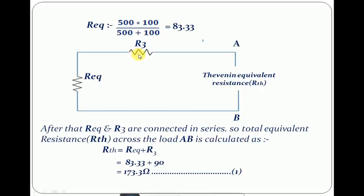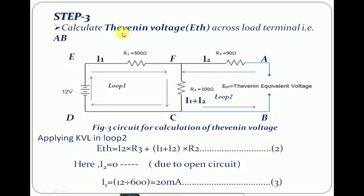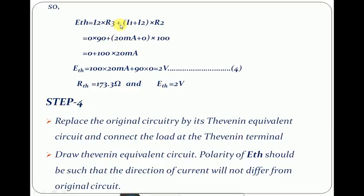Now R_eq is connected in series with R3, and the Thevenin equivalent resistance RTH is calculated as R_eq + R3, whose value is 173.33 Ω. Step three: calculate the Thevenin voltage across the load terminal AB. Applying KVL in loop 2 for the calculation of ETH: ETH = I2·R3 + (I1 + I2)·R2. Here I2 = 0 due to the open circuit. So R1 and R2 are in series with equivalent resistance of 600 Ω. I1 is calculated as 20 mA. Substituting the values, ETH is found to be 2 V.